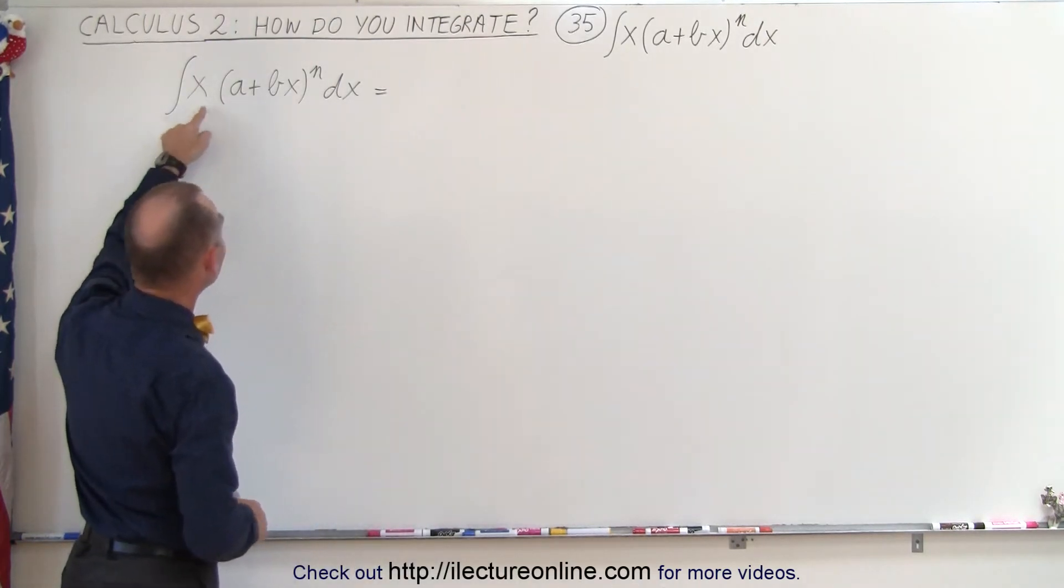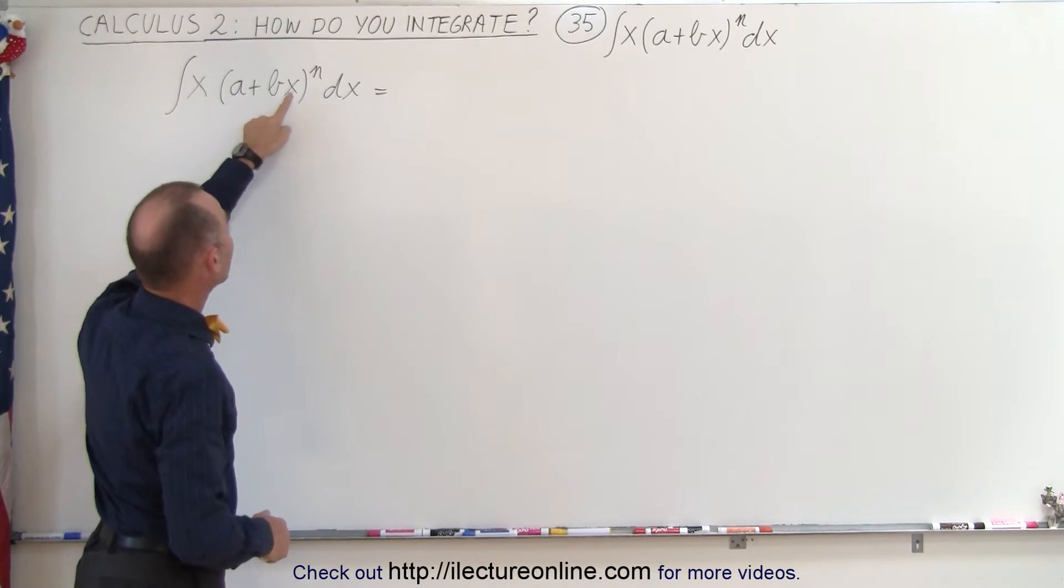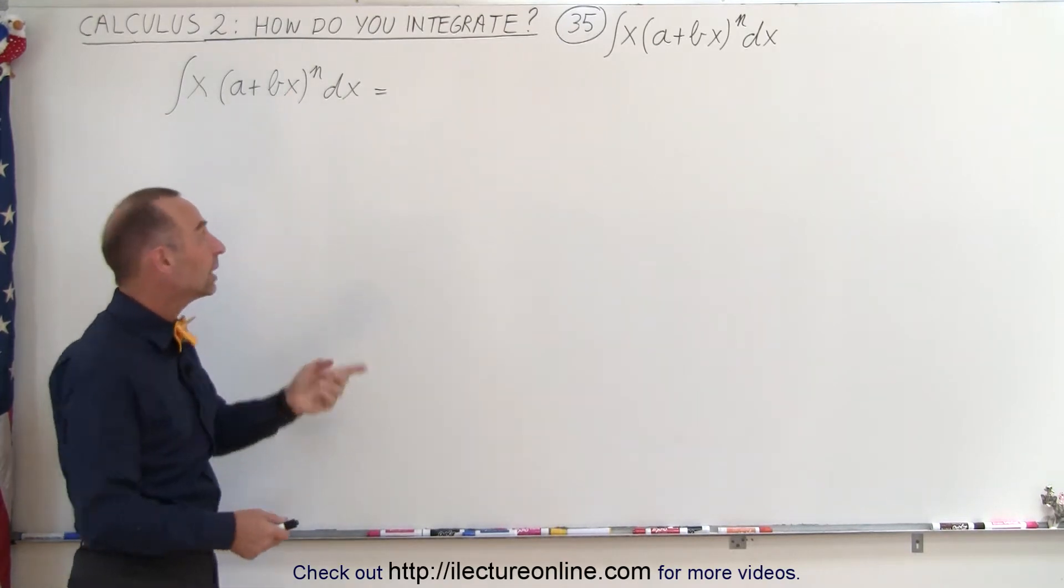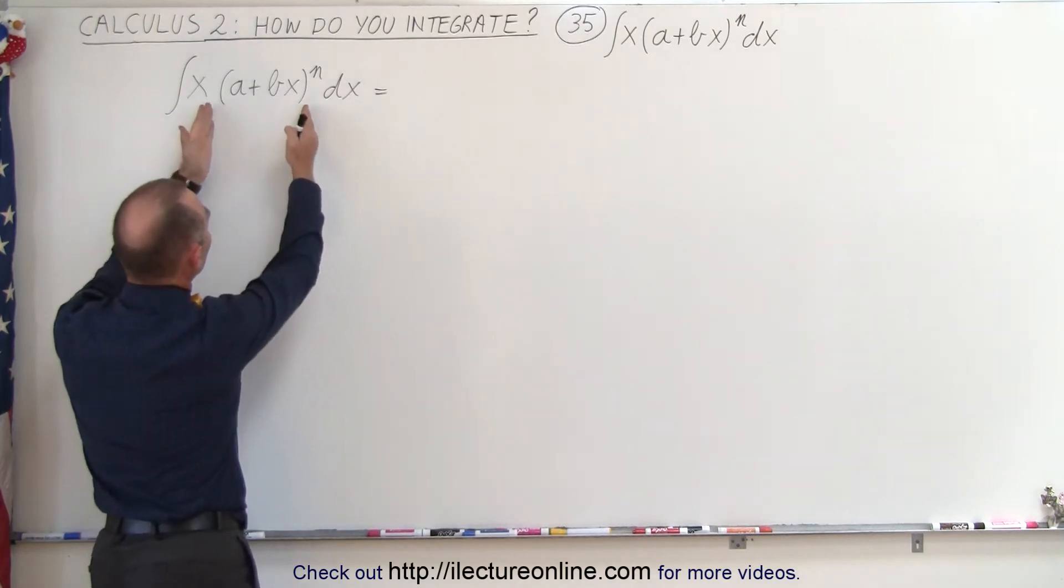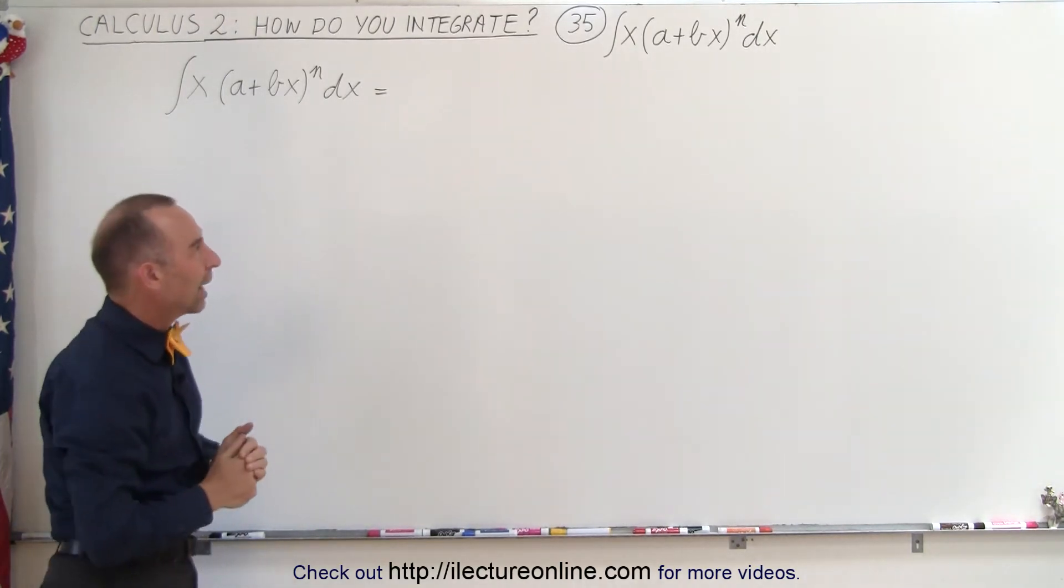Here we have the integral of x times the quantity (a + bx) to the n power. Unfortunately, x times dx is not the proper differential of what's inside these parentheses. So how do we deal with that?